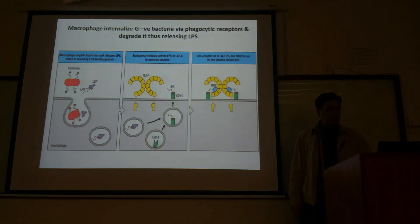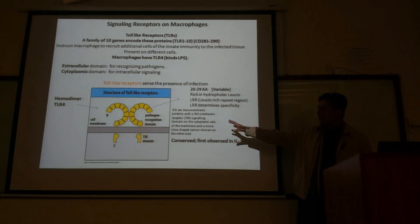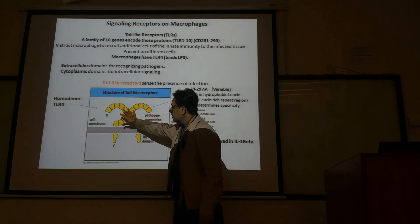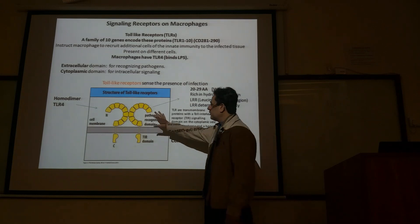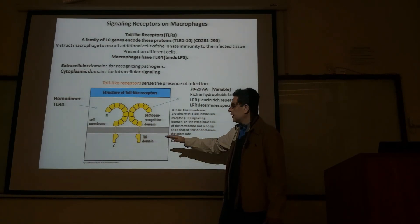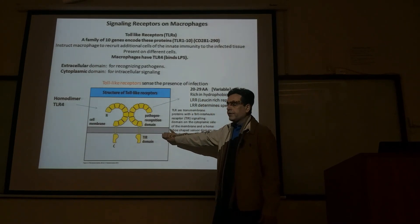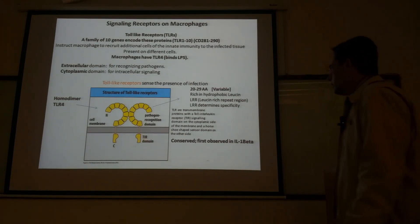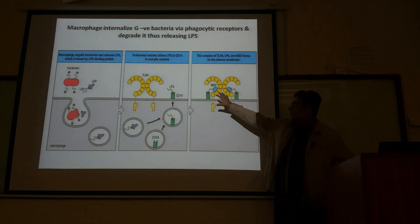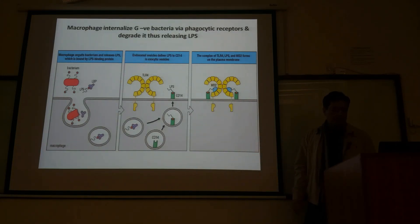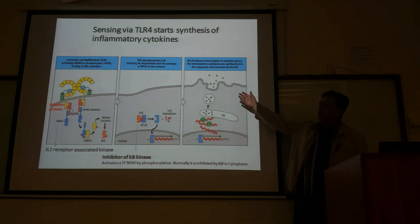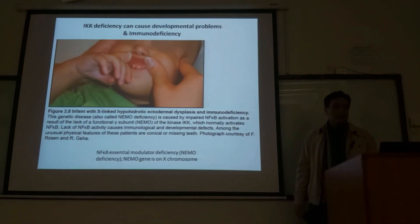The structure shown is a homodimer of TLR4 — the same horseshoe-like receptor with a pathogen recognition domain outside the cell and a TIR domain on the inner side, connected by a transmembrane domain. These receptors dimerize to be functional. This dimerization occurs during the assembly of pathogen and receptors on the surface of the macrophage, which activates signaling leading to the production of molecules required for the inflammatory process.